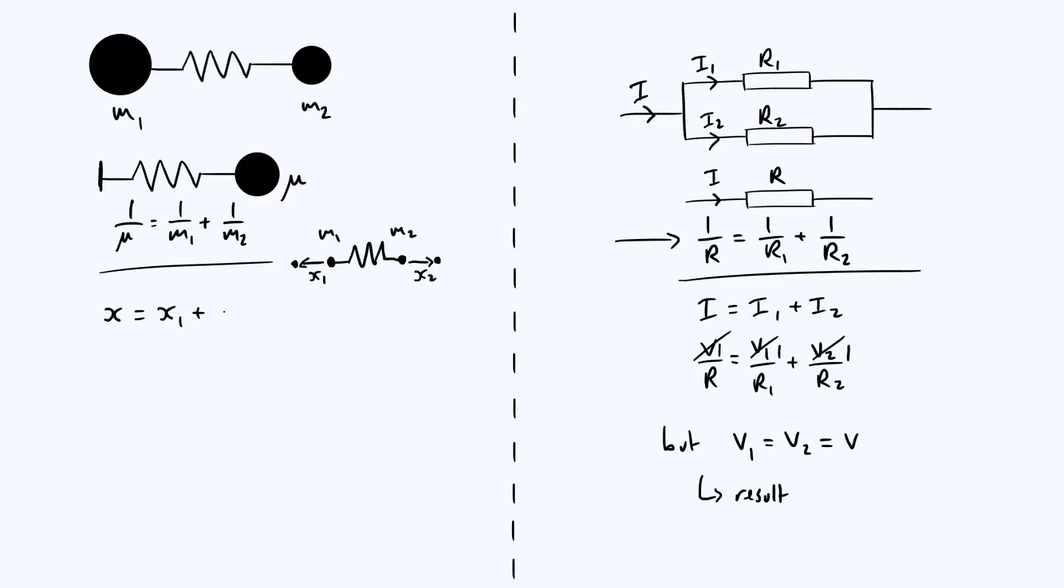Now we can combine those little displacements into an overall displacement which I'm just going to call x. x is just going to be the sum of the individual displacements. The overall extension of the spring is just going to be the sum of those individual little displacements, and they're added together because I've defined them to be going in opposite directions. This in a certain sense looks a little bit like this current equation over on the right, where you have an overall quantity being equal to the sum of two sort of partial quantities.